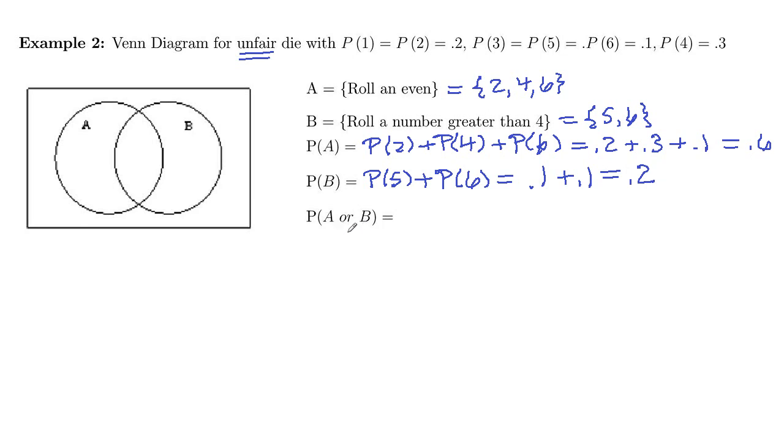A or B. Let's lay these out on the Venn diagram here. So A is you roll an even, that's two, four, six, and then B is a number greater than four, which is five, six. Six is in both A and B.